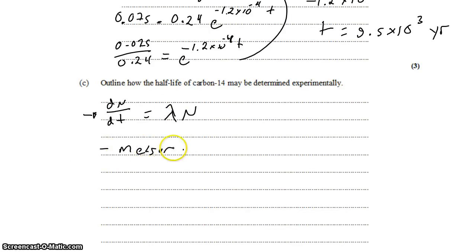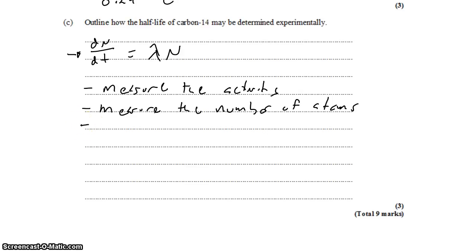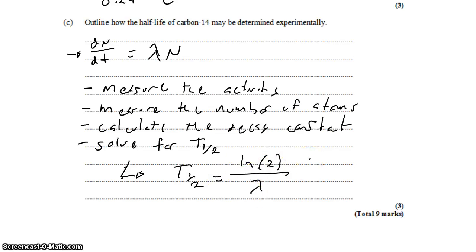So we'll measure the activity. And that's something we could do with, say, a Geiger counter. And we'll measure the number of atoms. And that's something that we could maybe do by just measuring the mass of the sample. Which allows us to calculate the decay constant using this equation here. And then solve for the half-life using this equation. The same one we used earlier. So once we have the decay constant, we can get the half-life. The decay constant can be calculated using the activity and the number of atoms in the sample.